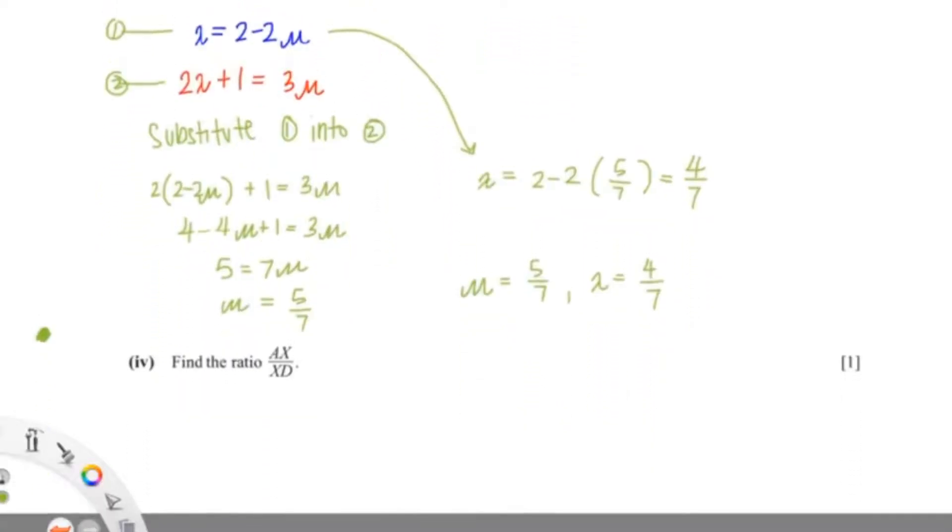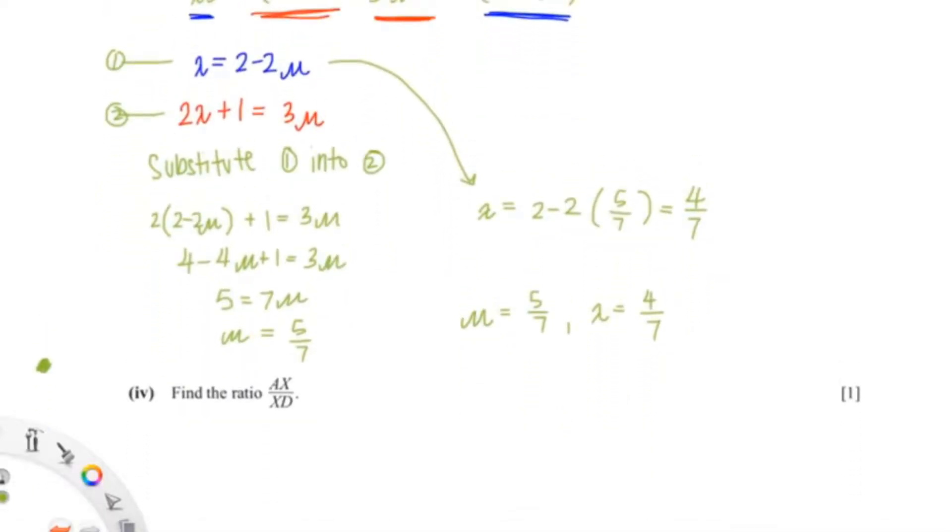Now onto our last question. And it says find the ratio of AX over XD. Now I'll just draw a line. So that's D, that's A, and X is somewhere about here, not the midpoint though.